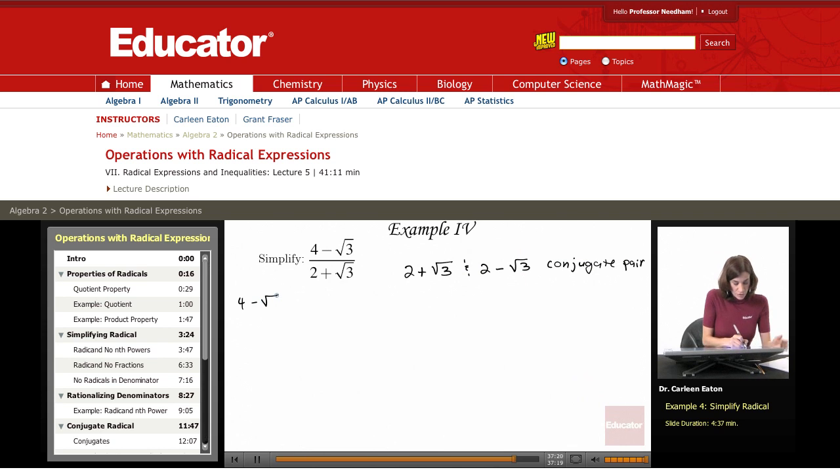So I'm going to take 4 minus radical 3 divided by 2 plus radical 3 and I'm going to multiply that times this conjugate, 2 minus the square root of 3. This is just the same as multiplying this by 1.